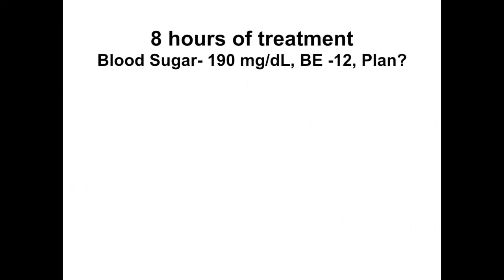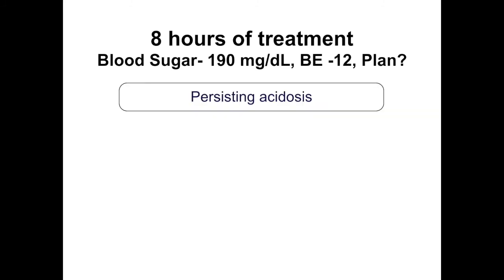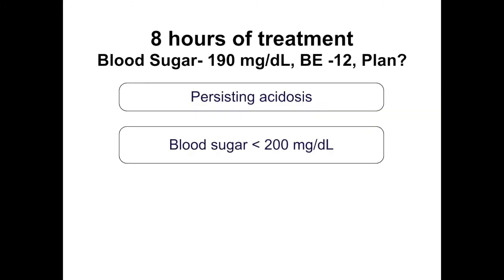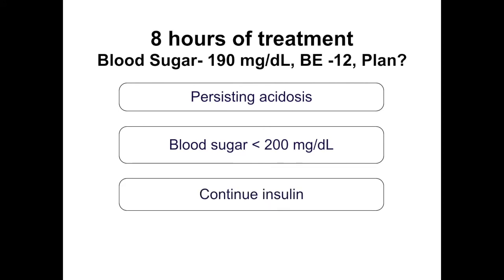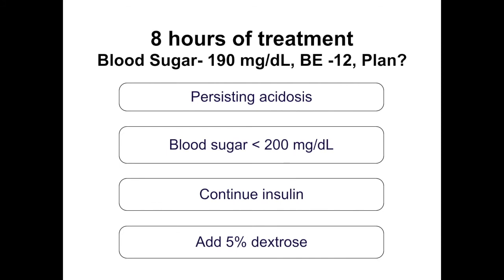At 8 hours, blood sugar has come down but acidosis persists. In this situation, because blood sugar is falling while acidosis continues, dextrose must be added — 5% or 10% depending on the blood sugar level.